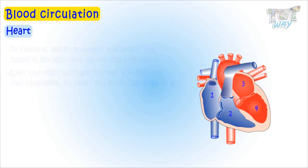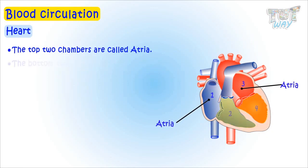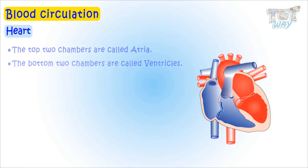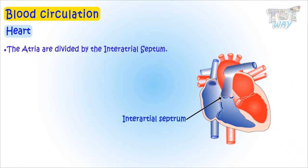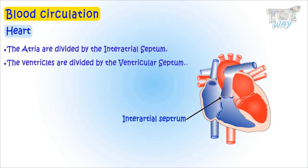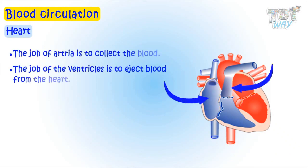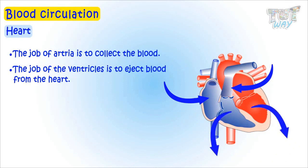The top two chambers are called atria and the bottom two chambers are called ventricles. The atria are divided by the interatrial septum and the ventricles are divided by the ventricular septum. The job of the atria is to collect the blood, and the job of the ventricles is to eject blood from the heart.